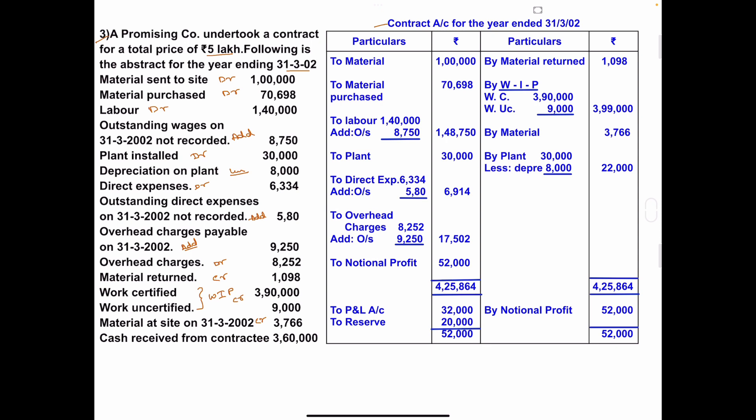Contract account for the year ended 31st March 2002. First, material sent to site: ₹1,00,000. Then material purchased, to be debited — write on the debit side: material purchased ₹70,698.